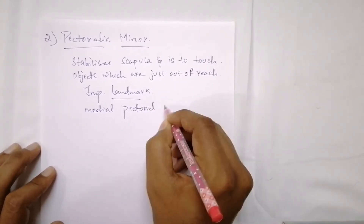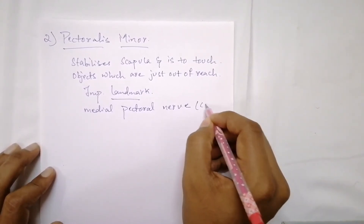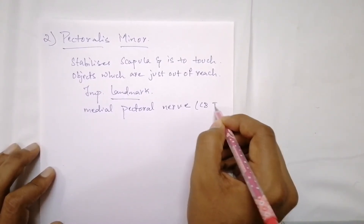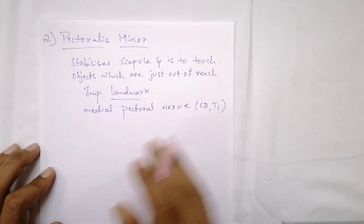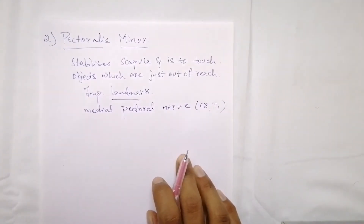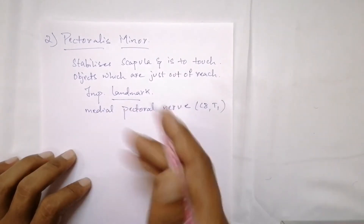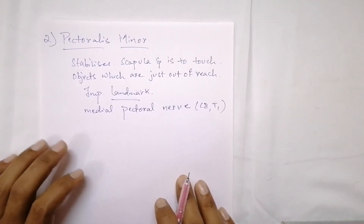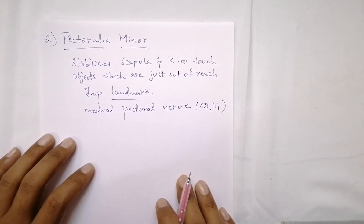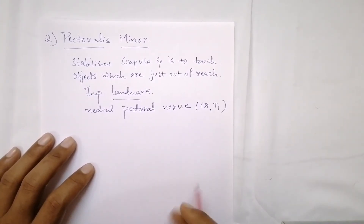The medial pectoral nerve is derived from C8 and T1 vertebral levels. The main action of pectoralis minor is that it stabilizes the scapula by drawing it inferiorly and anteriorly against the thoracic wall.